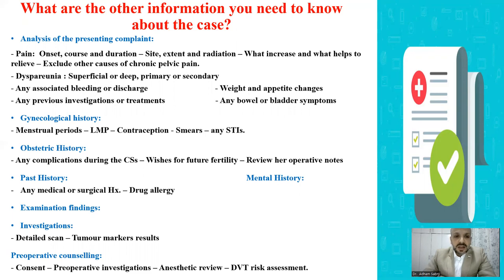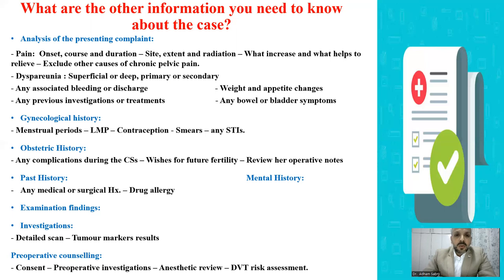Information means history, examination, and investigations. After the history, ask about examination findings if available, and any previous investigations. You need a detailed scan to know the criteria of the cyst, and the result of tumour markers. This lady is 30 years old, so besides CA125, ask about LDH, alpha-fetoprotein, and HCG. A very important point is to know about preoperative counselling — what the patient is consented for, if she was offered alternatives to laparoscopic surgery, preoperative investigations, anaesthetic review, and DVT risk assessment.